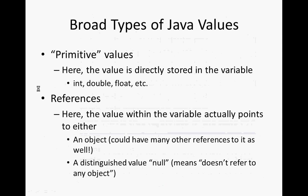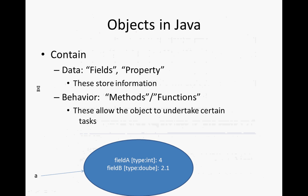Objects contain information. In Java, we refer to their fields, properties, or attributes. And then they have behavior encoded in methods or functions — things that either calculate a value or do something. We say objects have state and they have behavior.